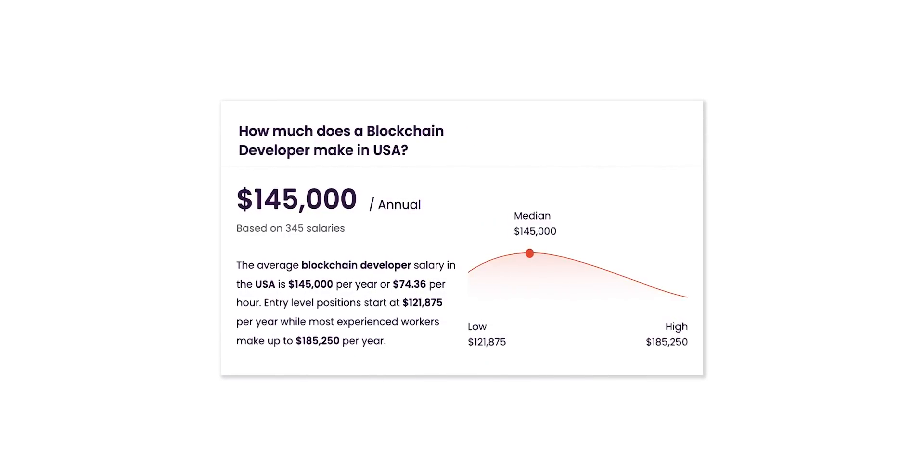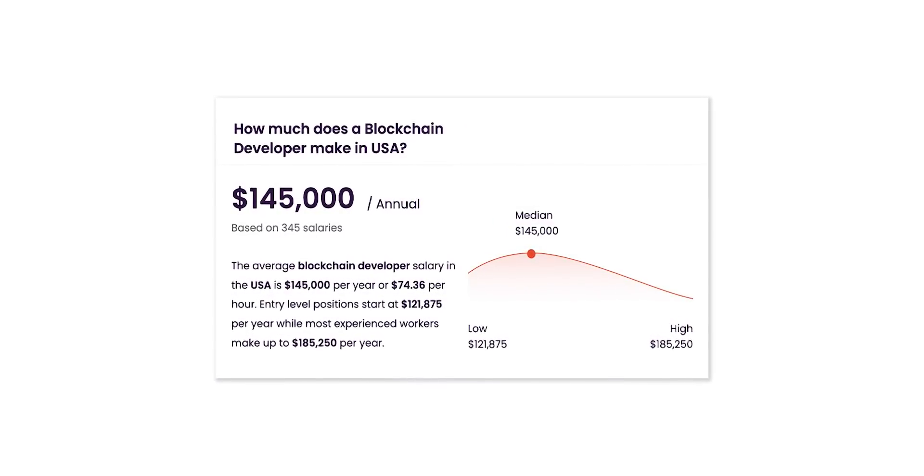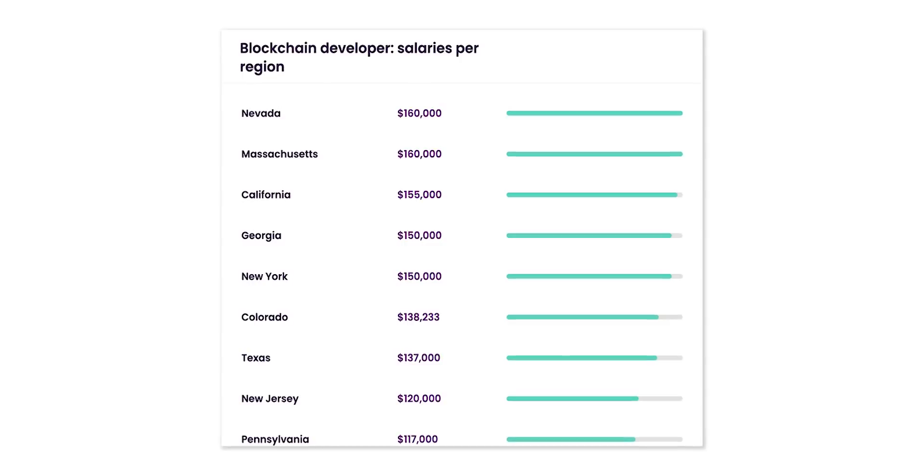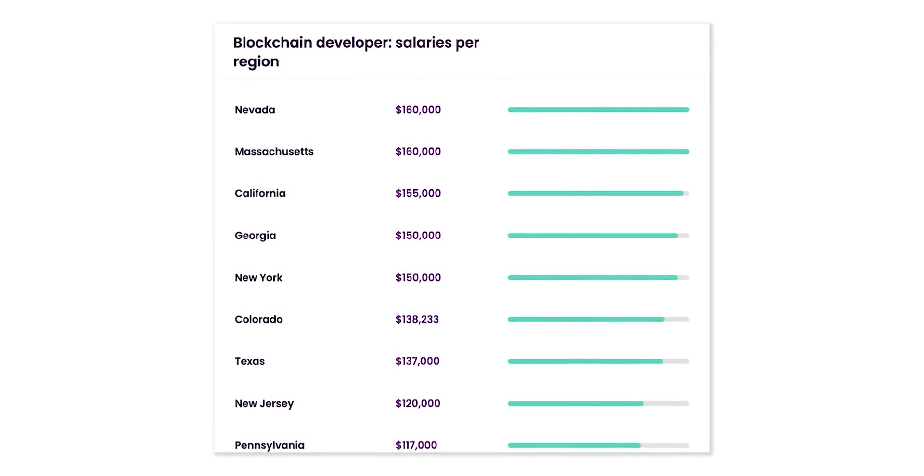That doesn't necessarily mean there are very many job openings — it's not like you'll have 2X or 3X as many Web3 jobs compared to web development. Jobs exist, but those jobs are very highly paid. If you look at the data, even in remote cases you have salaries going up to $150,000–$170,000 US dollars. This is completely normal in the US or tier-1 countries as a salary range for Web3 developers.